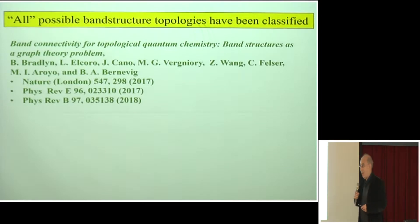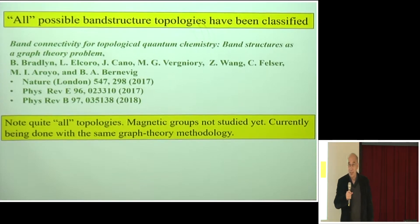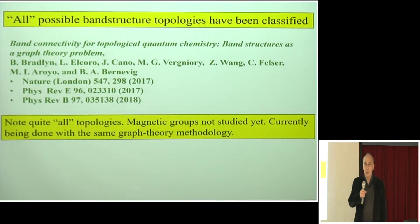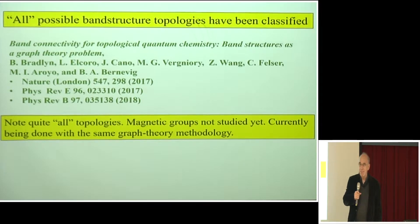They ultimately found, in this sense, all possible band structures — all possible band structures from the topological point of view. Now, it's not quite all possibilities yet, because magnetic groups were not studied yet. And this is what I understand they are currently doing. But then, once this is done, in a way, all possibilities have been found.